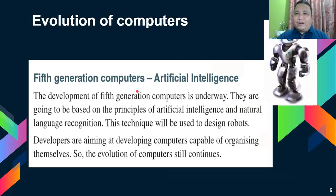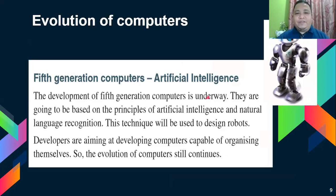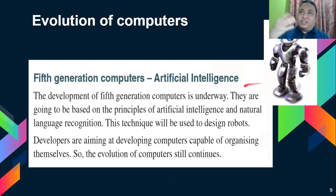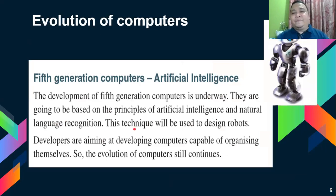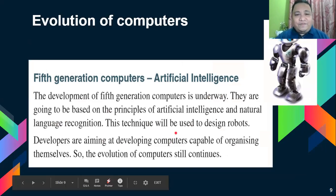We are now in the fifth generation computers — AI. The development of fifth generation computers is underway. They are going to be based on the principles of AI and natural language recognition. This technique will be used to design robots, and robots are already here in our midst. Developers are aiming to develop computers capable of organizing themselves. The evolution of computers still continues until now.